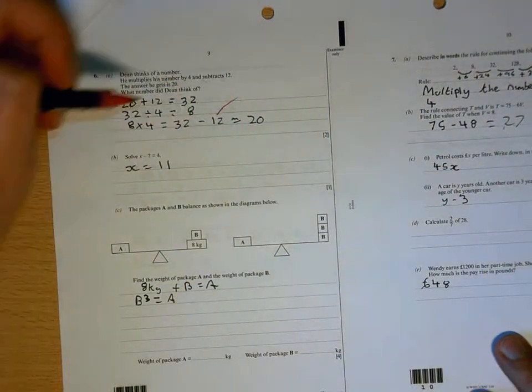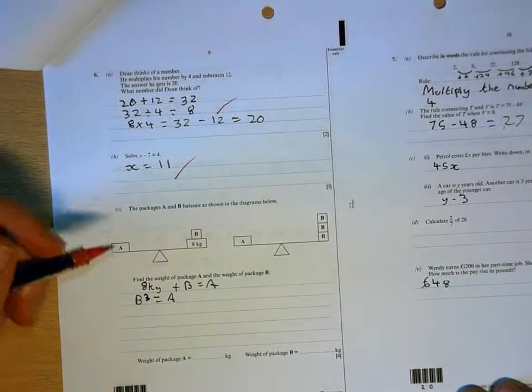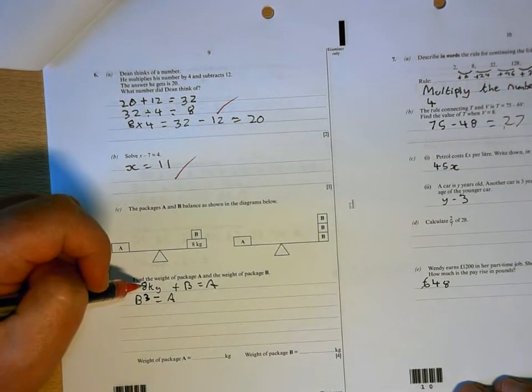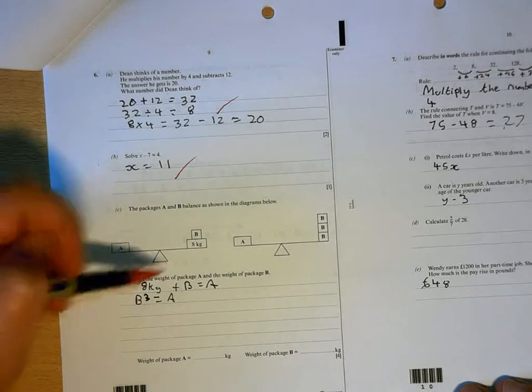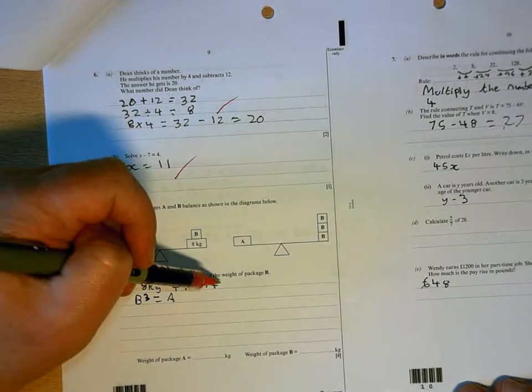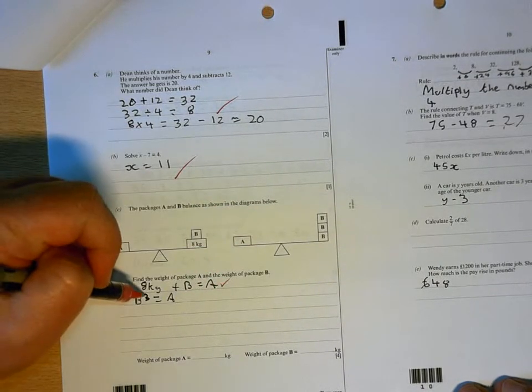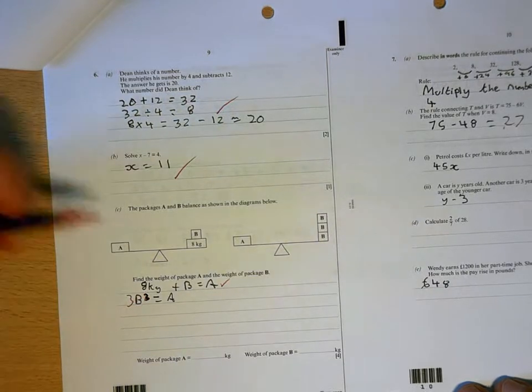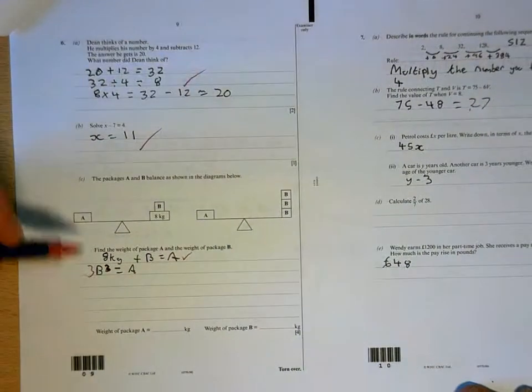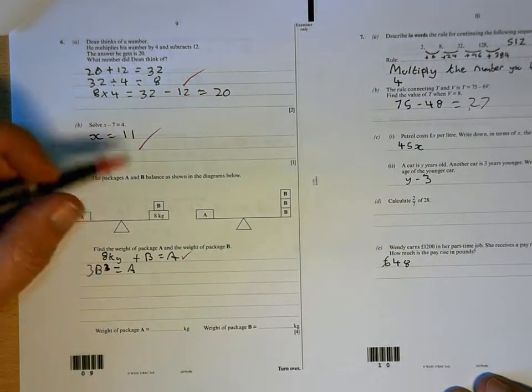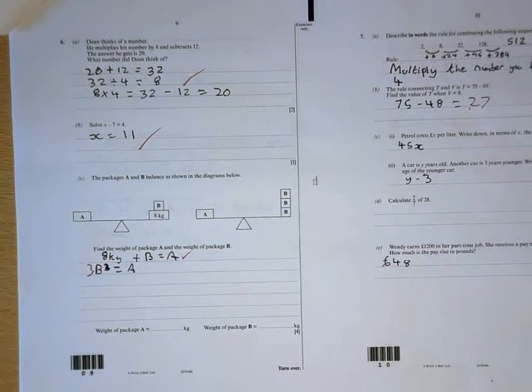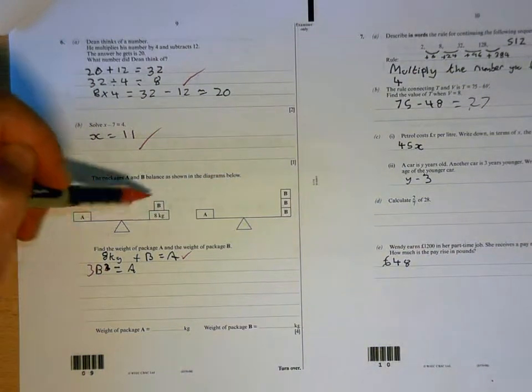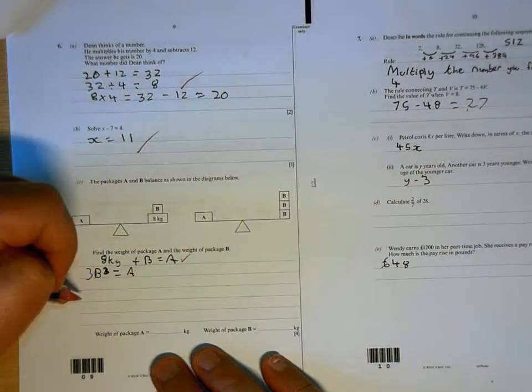It's eight. It's eleven. Eight cubed plus b equals a. Correct. And three b, not b cubed. Three b equals a is also correct, but what you're missing, and the most important bit, is because both of those balance, that must equal that.